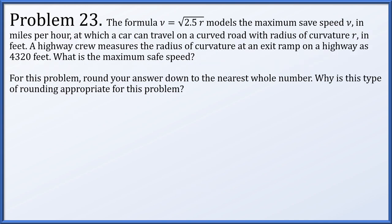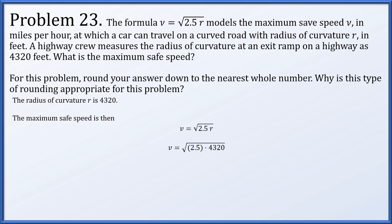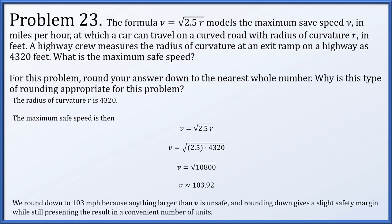Problem 22: police use the formula v equals the square root of 20 times l to estimate car speed from skid mark length. At an accident scene, the skid mark is 236 feet long. Plugging l equals 236: v equals the square root of 20 times 236, which is the square root of 4720, approximately 68.7 miles per hour. Problem 23: the formula v equals the square root of 2.5 times r models maximum safe speed on a curve with radius r. With r equals 4320 feet: v equals the square root of 2.5 times 4320, which is the square root of 10800, approximately 103.92 mph. We round down to 103 because anything above the maximum safe speed is unsafe, and rounding up would be dangerous.